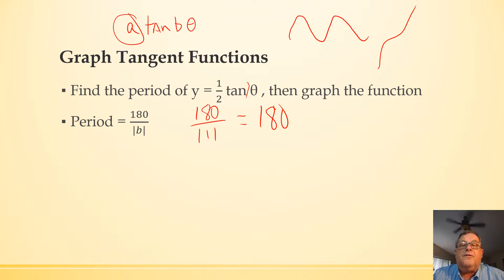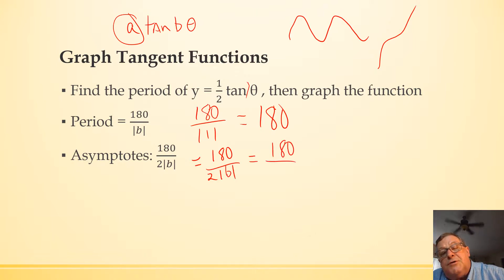So, our cycle is going to be between 0 and 180, and then any multiples of that. We will have asymptotes at 180 over 2 times the absolute value of b, which in this case would be 180 over 2 times the absolute value of b, which b is 1. So, really, we've got 180 over 2, or 90.